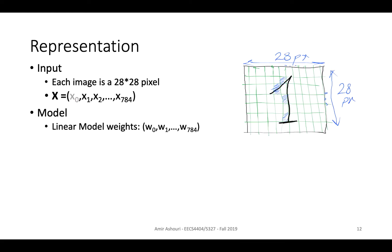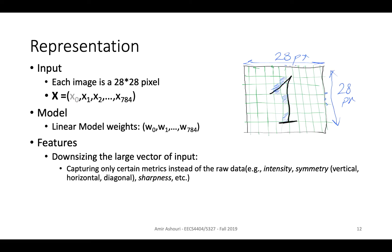Our input starts from X_0 — the artificial coordinate added as a threshold or bias — then X_1 up to 28 times 28, which when vectorized becomes up to 784. Our model would be a linear model with the same number of weights, using a sign function over that — a perceptron. We need a matching vector of weights. The issue is we now have 784 inputs for just one image, which makes the problem much harder to train.